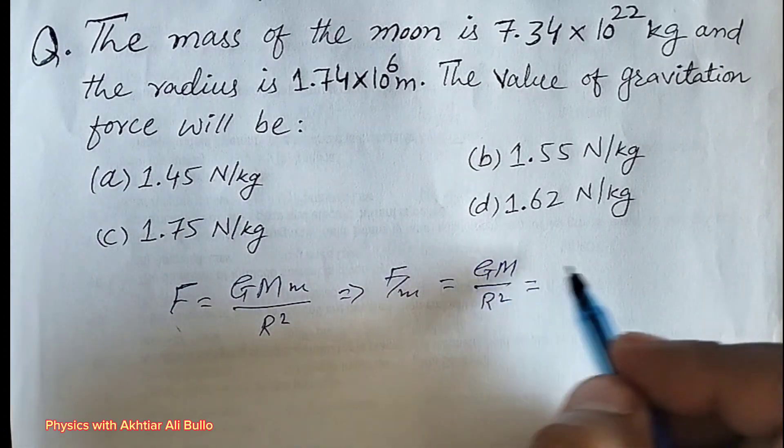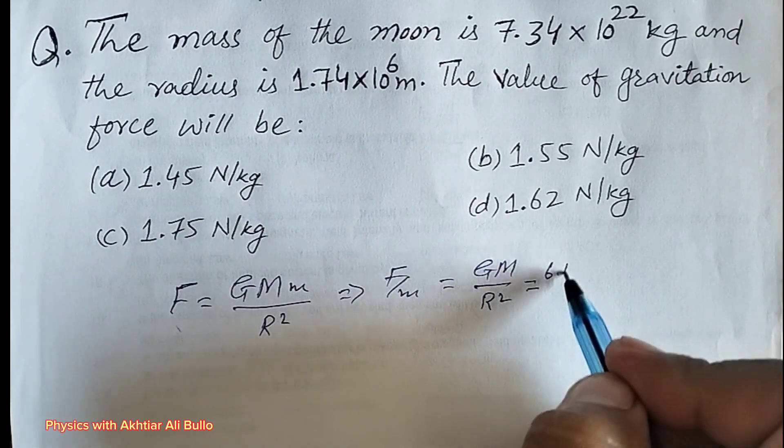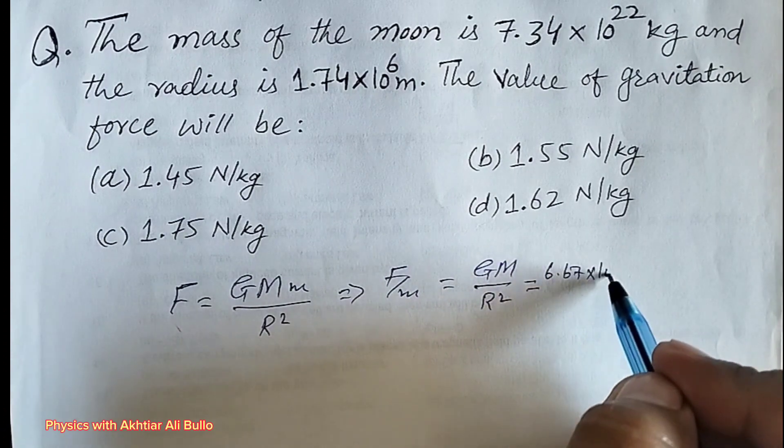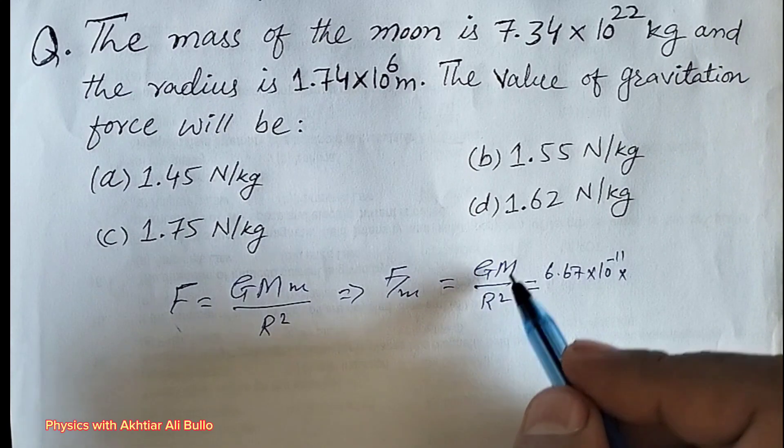By putting the values, the value of G means gravitational constant is 6.67 into 10 raised power minus 11 into the mass of the moon is 7.34 into 10 raised power 22 kg